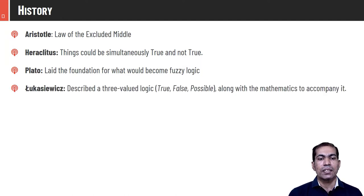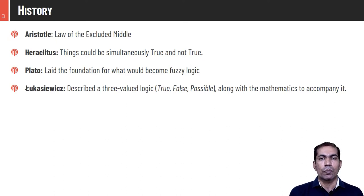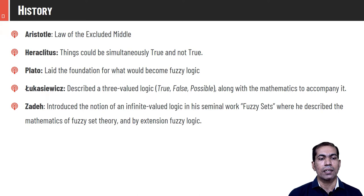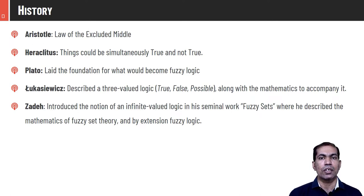Łukasiewicz also proposed mathematics to prove his concepts. Around 1965, Lotfi Zadeh introduced the notion of fuzzy logic in his seminal work 'Fuzzy Sets,' describing what fuzzy logic is, its applications, and how to perform various operations. The formal branch of fuzzy logic was developed thereafter, and that's why Lotfi Zadeh is coined as the father of fuzzy logic.